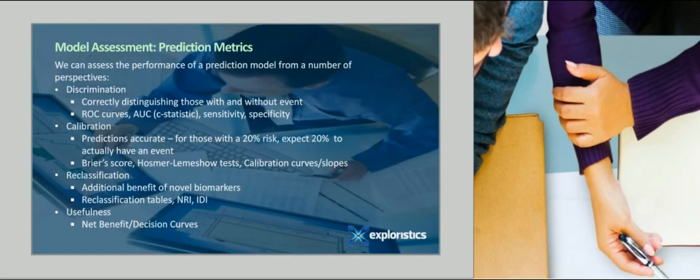Discrimination is very important for diagnostic biomarkers, but for prognosis, although it remains important, other issues are relevant too. Calibration asks, are individual predictions accurate, i.e., for those with a 20% risk from a well-calibrated model, we would expect 20% to actually have an event. This can be assessed by a Breyer score, the Holmes Lemus Hill tests, and calibration curves.